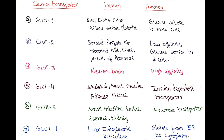GLUT5 is also known as the fructose transporter because the main sugar transported by it is fructose. It is present in the small intestine, testes, and kidney. GLUT7 is present in the endoplasmic reticulum and is involved in the transport of glucose from the endoplasmic reticulum to the cytoplasm. This concludes the topic of absorption of carbohydrates. Thank you.